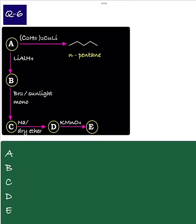Let us solve this question. In this question, A on reaction with Gilman reagent gives n-pentane.